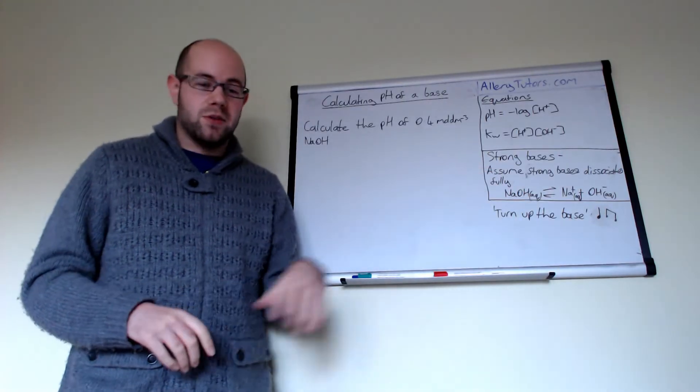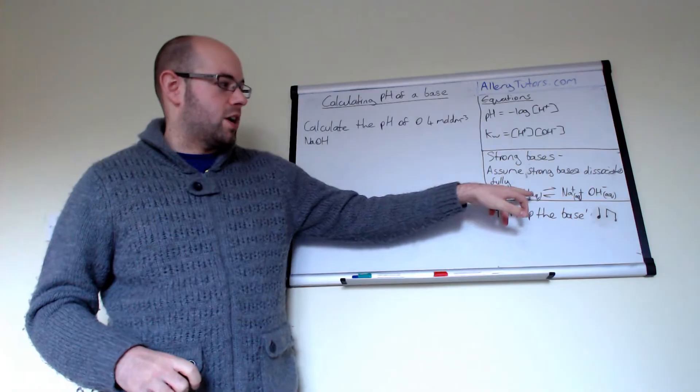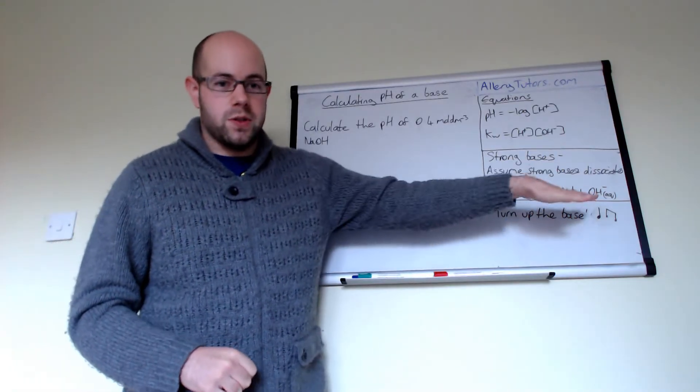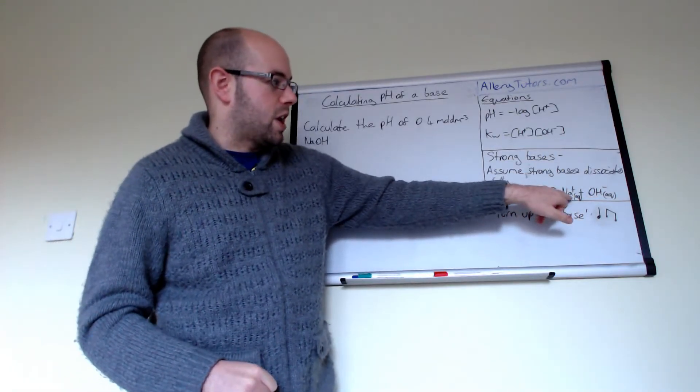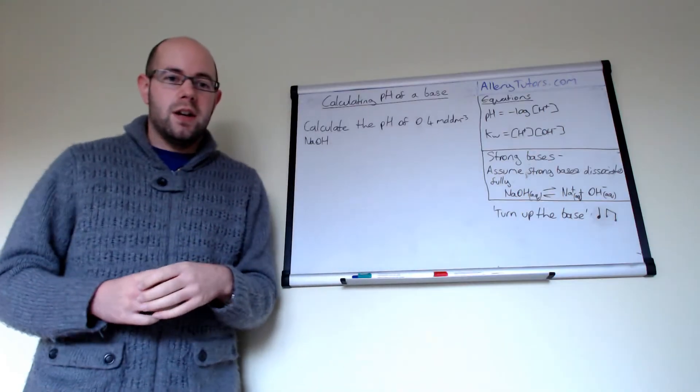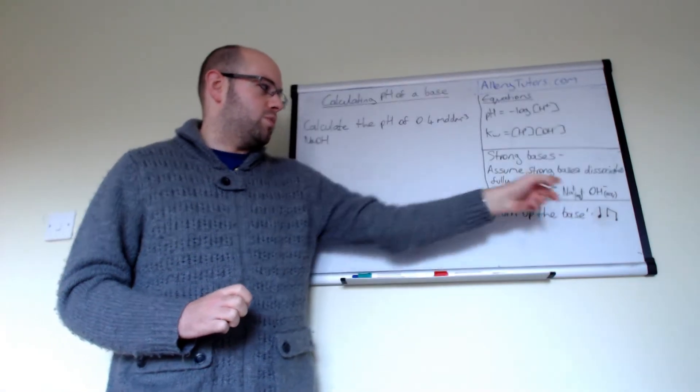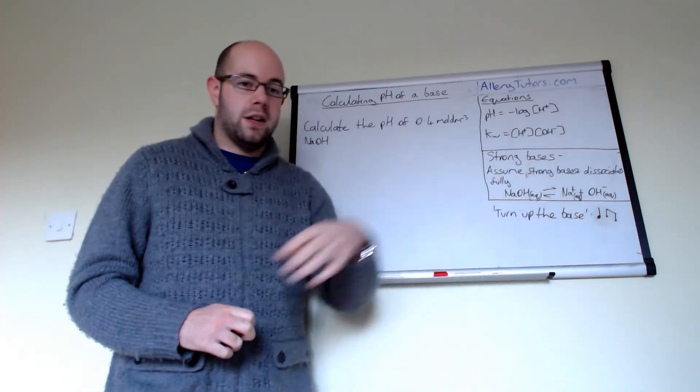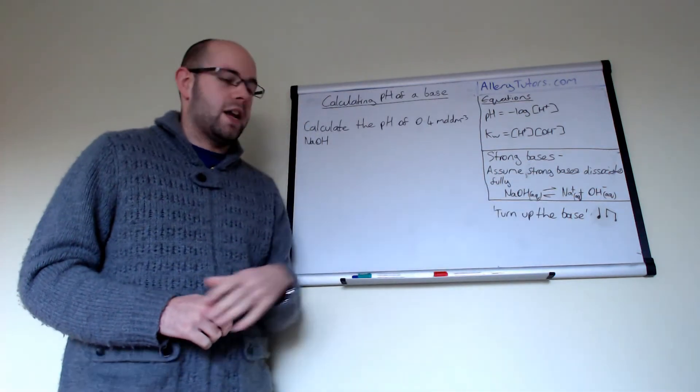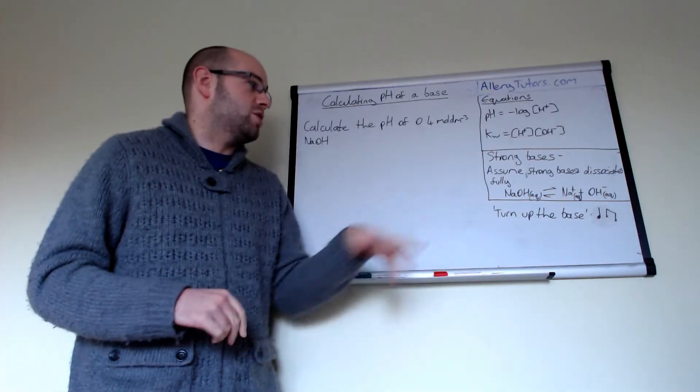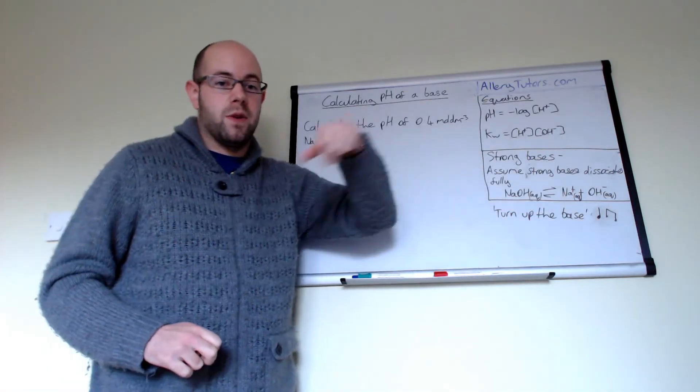Bases are the same. If we have sodium hydroxide, we assume that equilibrium lies well over to the right and it produces Na plus and OH minus. We can make the assumption that because it's a strong base we produce virtually 100% OH minus. The amount of NaOH is pretty much negligible compared to how much of this we've got.